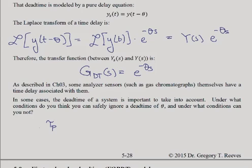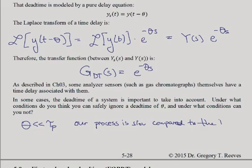Now, if tau p, our process time constant, is much greater than theta, or another way to say it is if our dead time theta is much less than our tau p, that means our process is so slow compared to the dead time, you can safely ignore dead time.